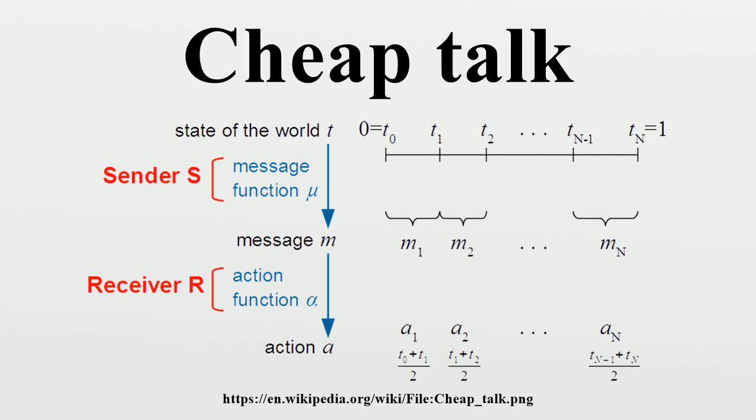Indifference. What happens at t = t_i? The sender has to be indifferent between sending either message m_{i-1} or m_i. This gives information about n and the t_i.